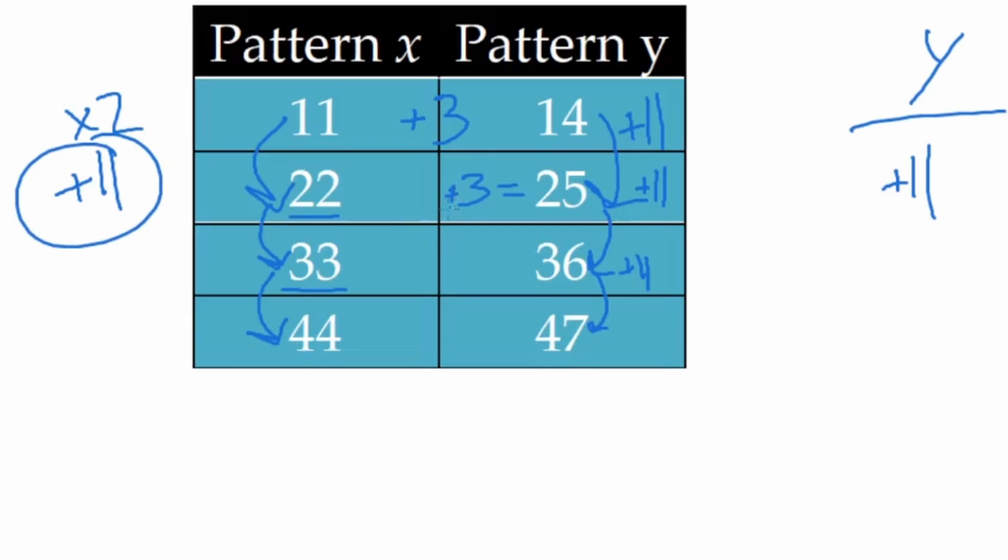33 plus 3 is 36. So the relationship side to side between these is that each term in pattern Y is 3 greater than the term in pattern X at the same level. The corresponding term, the difference between them is 3. So I could say each term in pattern Y is 3 greater or 3 larger than the term in pattern X. And that's one way that we can talk about the relationship between these two patterns.